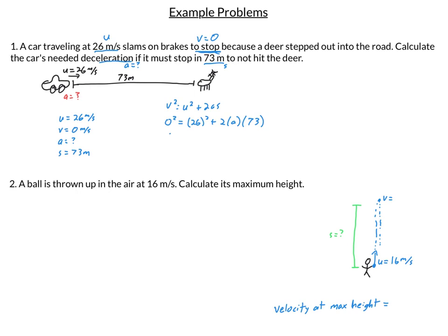26 squared is 676. 2 times 73 is 146 so I've got this times a. The very next step I need to subtract the 676 to the other side leaving me negative 676. That's a big deal, must have that negative sign on it. Equals 146 times a.